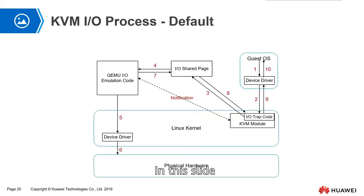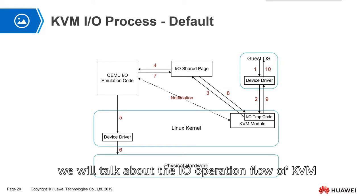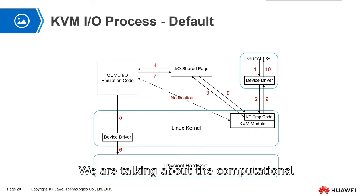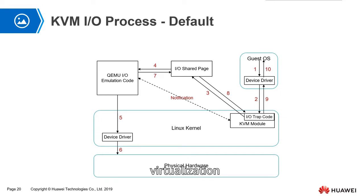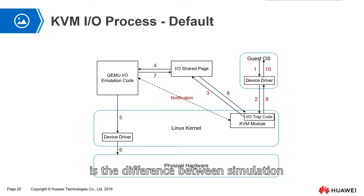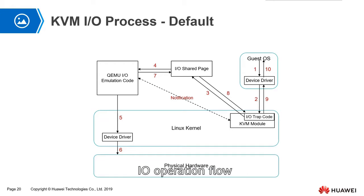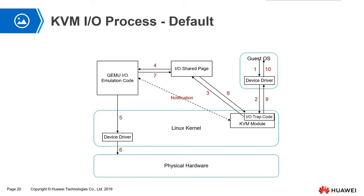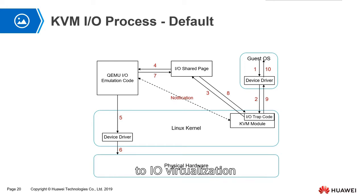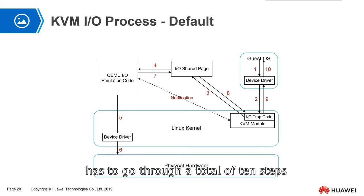In this slide, we will talk about the IO operation flow of KVM. We are talking about computational virtualization. The key problem is the difference between simulation and para-virtualization. By default, KVM's IO operation flow uses an analog approach to IO virtualization. The simulation method has to go through a total of 10 steps.